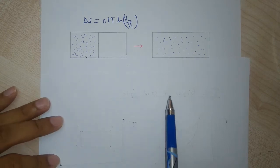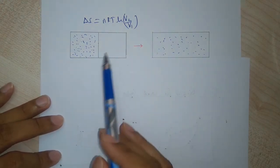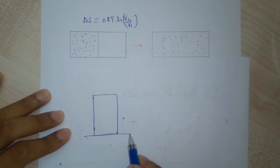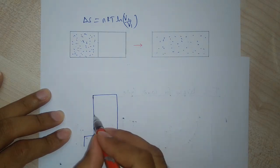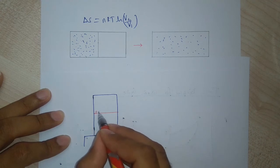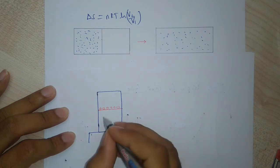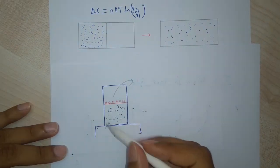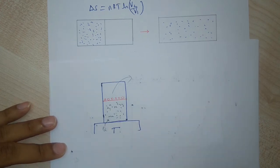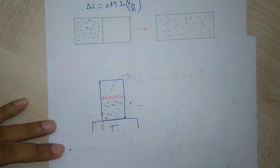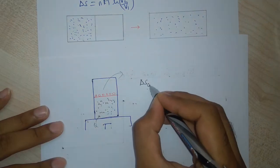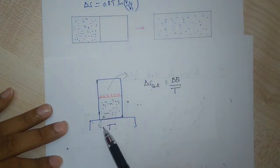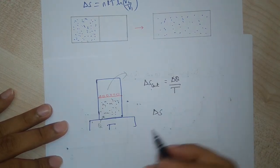There is a subtle point here. For the isothermal expansion setup, we have a container on a reservoir at temperature T, with a piston and weights on it. As we remove weights and heat is supplied from the reservoir to keep temperature constant, the gas expands. The change in entropy of the container equals the heat supplied divided by temperature.